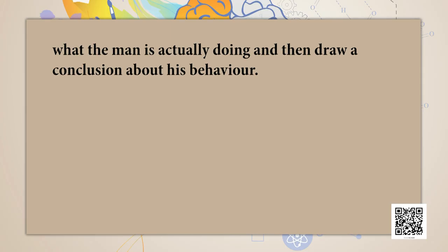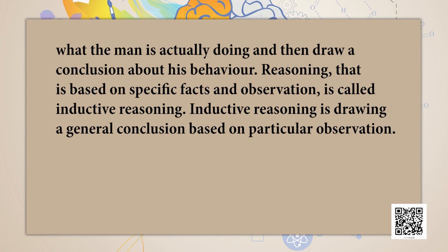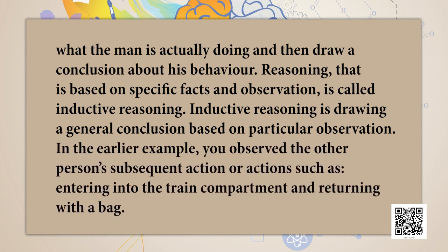Another way to figure out why the man is running is to use inductive reasoning. You would analyze other possible reasons, observe what the man is actually doing, and then draw a conclusion about his behavior. Reasoning based on specific facts and observation is called inductive reasoning — it is drawing a general conclusion based on particular observation. For example, you observed the person's subsequent actions, such as entering the train compartment and returning with the bag, and concluded that the person had left his bag in the train. One mistake here is jumping to a conclusion without knowing all possible facts.